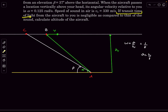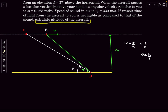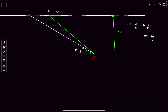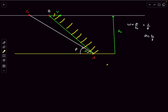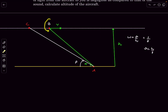We need to find altitude h. Sound emitted at C takes finite time to reach observer A, during which the plane moves from C to B. Light is assumed to travel instantaneously, so the observer sees the plane at B, but hears sound from direction C. The time delay is what separates the visual and auditory positions.